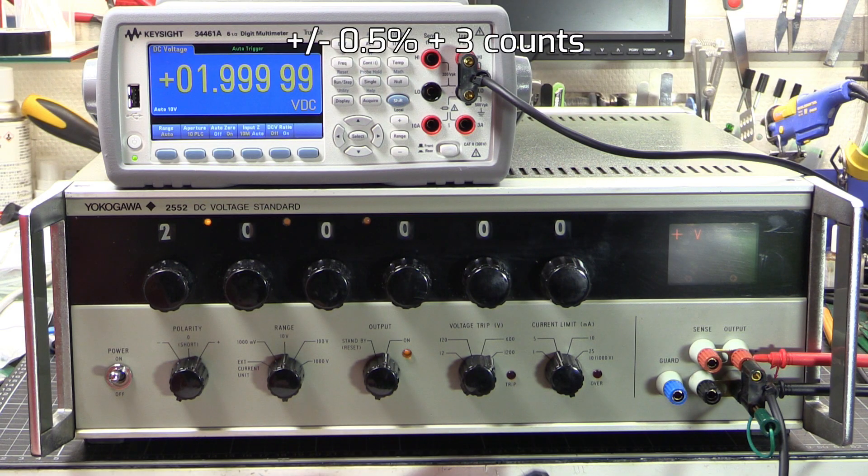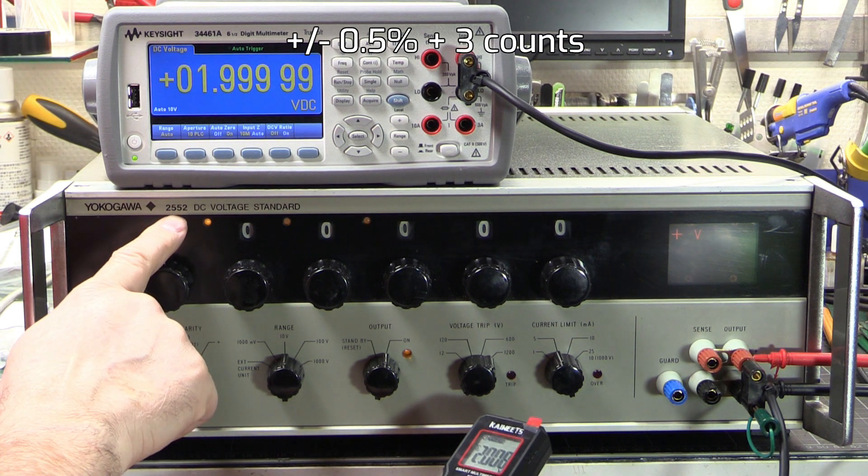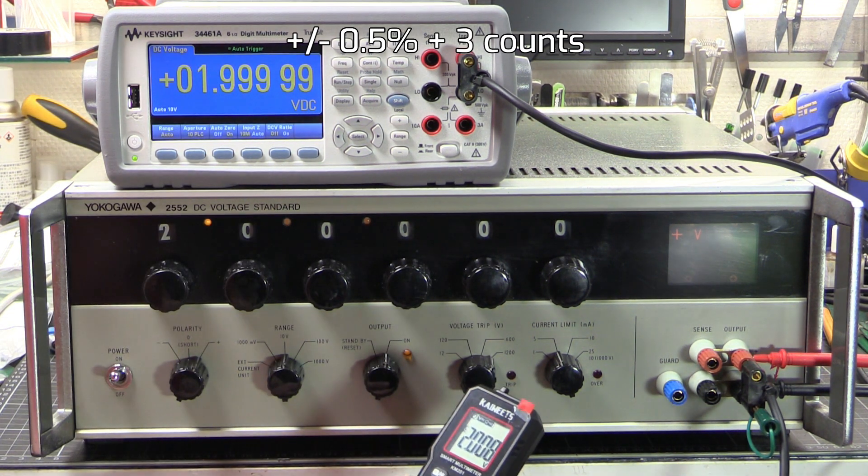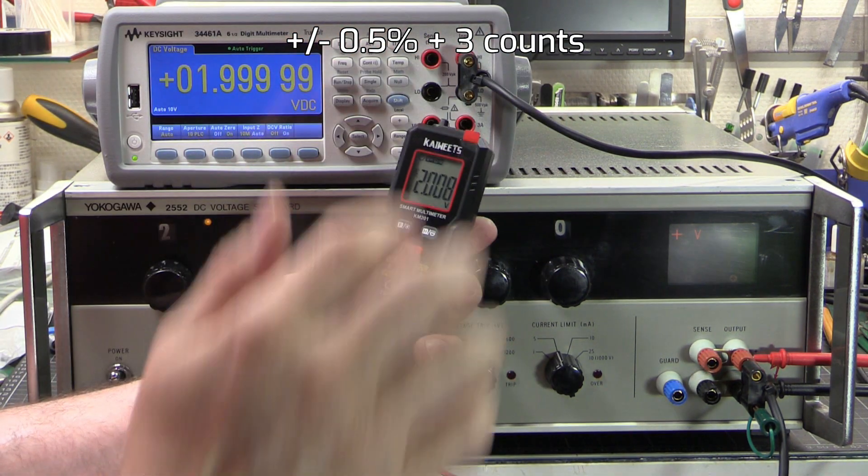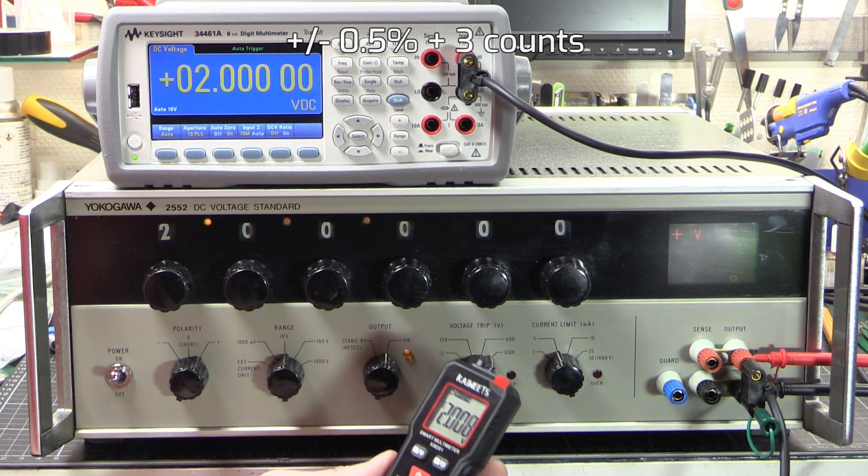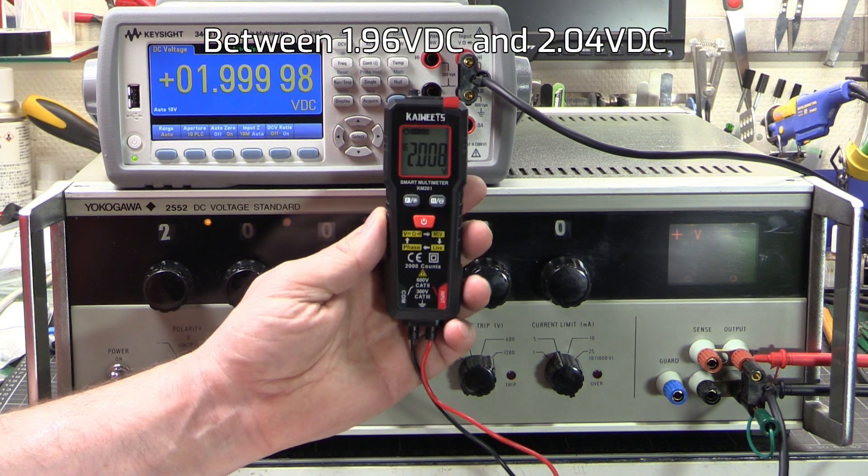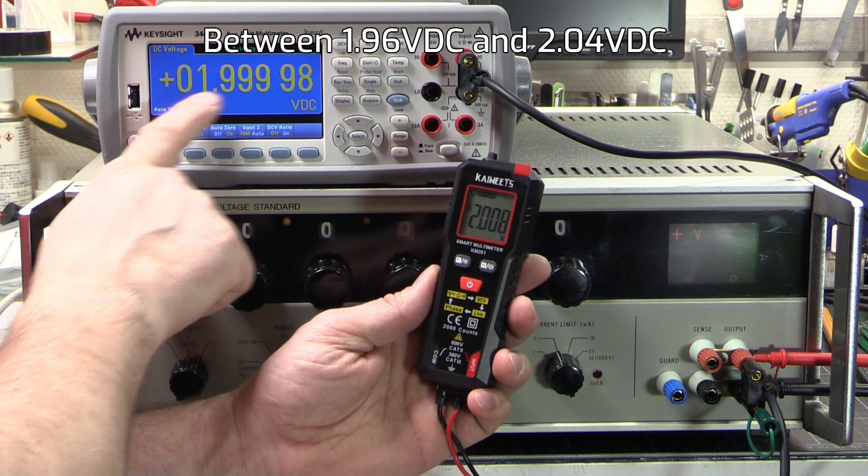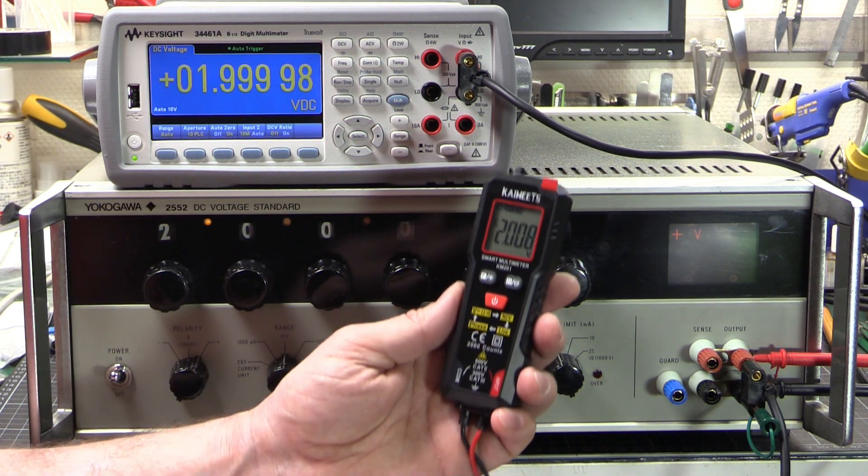And the DC voltage test now. We've got the Yokogawa 2552 DC voltage standard. And we've got it set to 2 volts. We're going to do the same deal. Looking on here compared to here. And it should be below 2.04, between 1.96 and 2.04. And we've got 2.008 for basically exactly 2 volts output. That one's good.